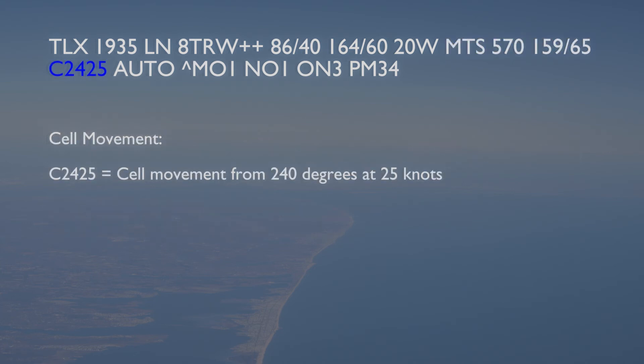The next item in the report describes movement of the radar returns. The letter C signifies the cell movement portion of the radar weather report. It is followed by two numbers representing the direction from which the weather is moving, and two more digits representing the speed of the movement. The example report shows the weather to be moving from 240 degrees, from the west to the east, at 25 knots.